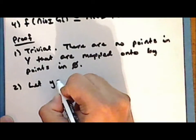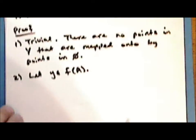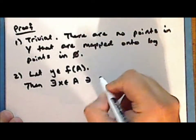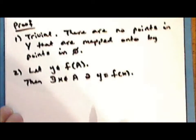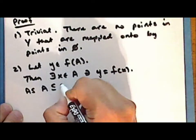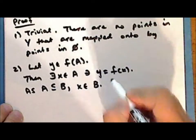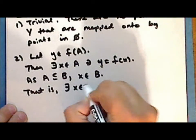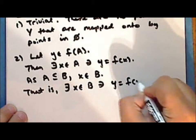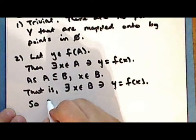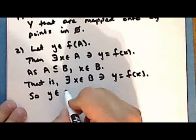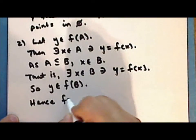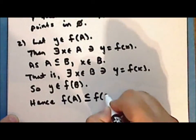Second statement: let y be a point in the direct image of the set a. Then there exists a point x in the set a such that y equals f of x. Now as a is a subset of b, this point x is in the set b — that is, there exists a point x in the set b such that y equals f of x. And so the point y is in the direct image of the set b, and hence the direct image of the set a is a subset of the direct image of the set b.